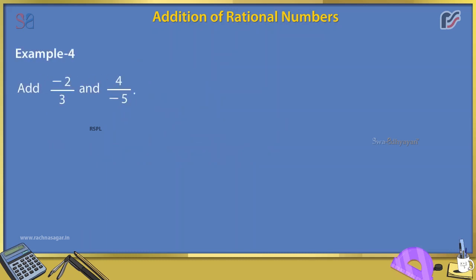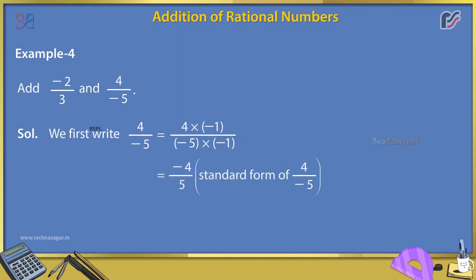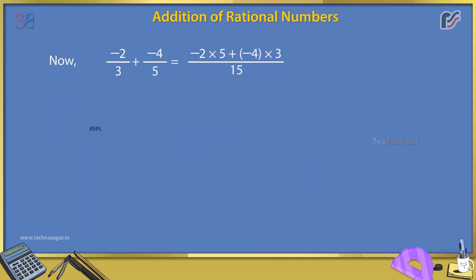Example 4: Add -2/3 and 4/(-5). Solution: We first write 4/(-5) = (4 × -1)/((-5) × -1) = -4/5 (standard form of 4/(-5)). Now, -2/3 + (-4/5) = (-2 × 5 + (-4) × 3)/15 = (-10 + (-12))/15 = -22/15 = -1 and 7/15.